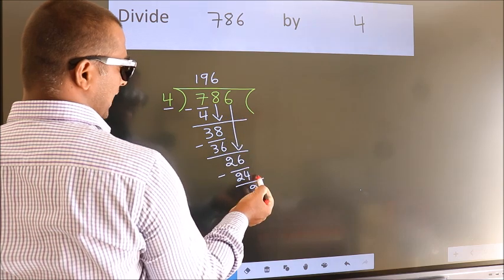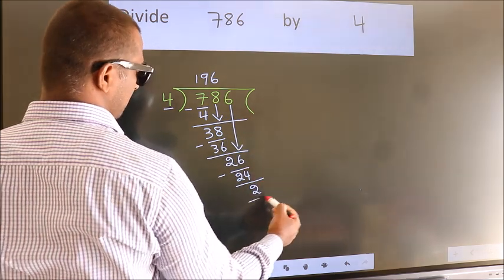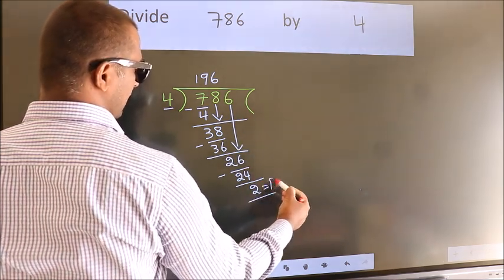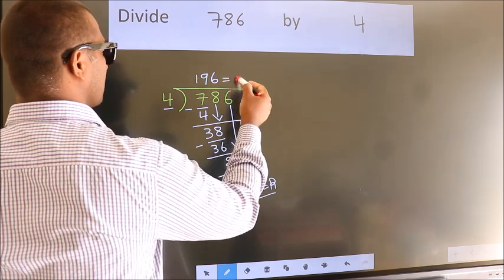No more numbers to bring it down, so we stop here. This is our remainder. This is our quotient.